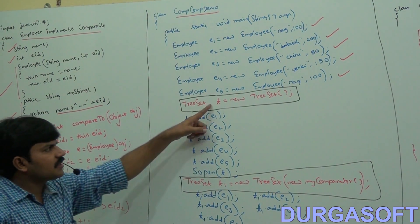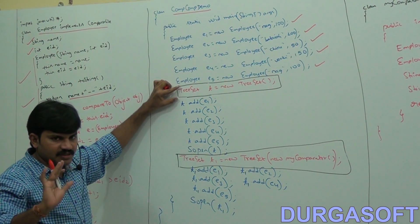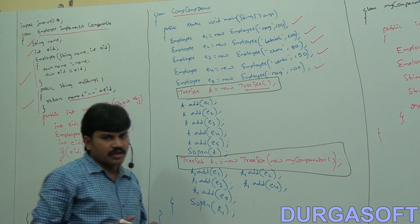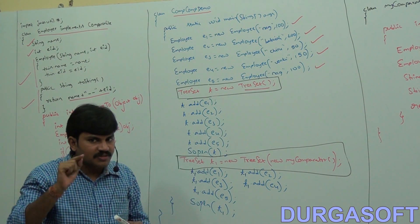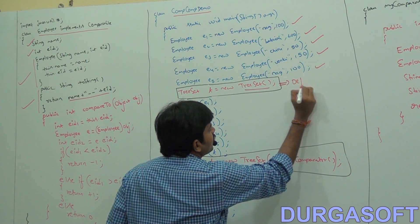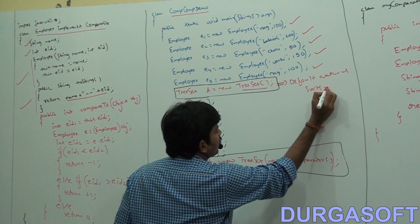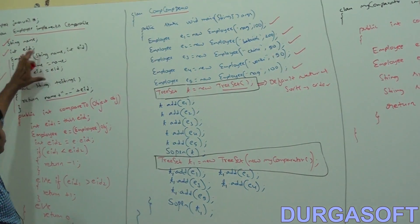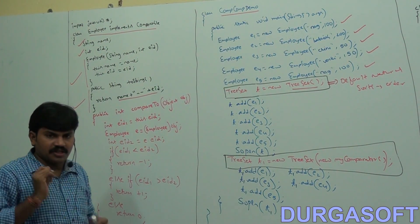Now, TreeSet T is equal to new TreeSet — an empty TreeSet object created using the no-argument constructor. The no-argument constructor means default natural sorting order. This TreeSet uses default natural sorting order.